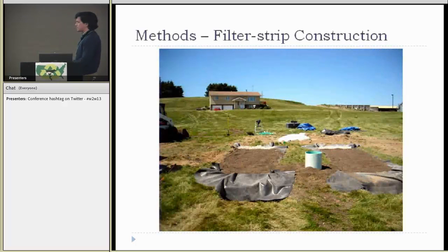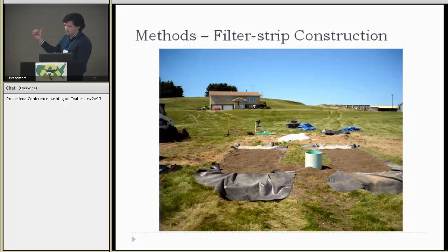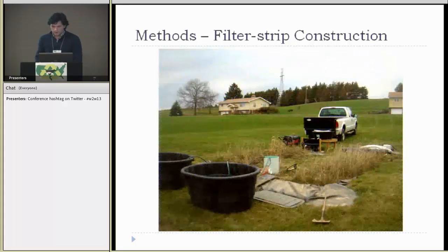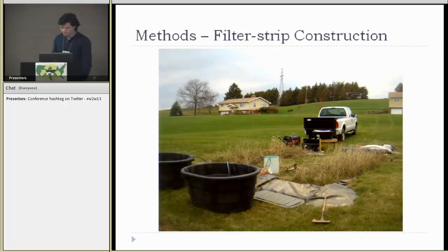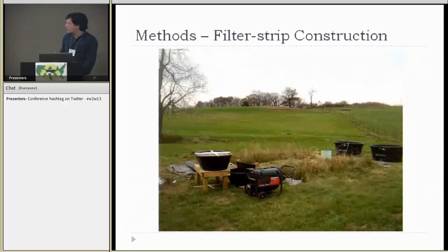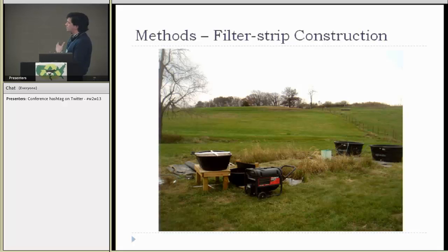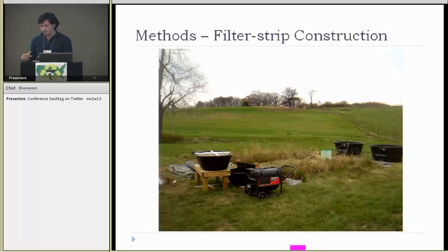Here's a view before the grass was established, showing the two filter strips. The tank in the background is where the runoff was collected from the dairy bunkers and routed by gravity. Here are the filter strips during a run with grass established. The two livestock tanks at the end are collecting the subsurface effluent being pumped from below, along with the two surface collection tanks. You can also see the dispersion apparatus; a sump was used to pump the runoff to it, and a flow monitoring device was used to apply at the rates and volumes of the design storms.